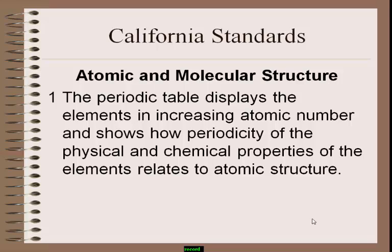In the periodic table, it displays the elements in increasing atomic number and shows how periodicity of the physical and chemical properties of the elements is related to atomic structure. Elements are arranged in the increasing order of their atomic number.